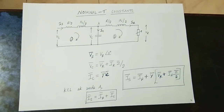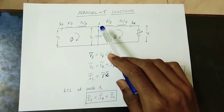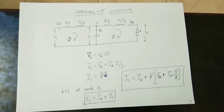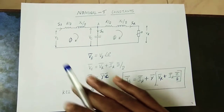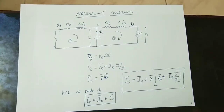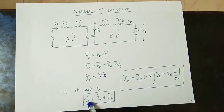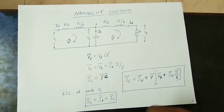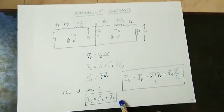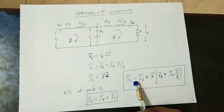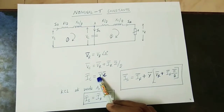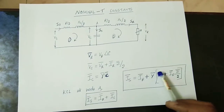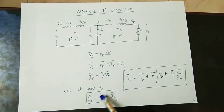Now the third thing: applying KCL at the node, Is is equal to Ir plus Ic.